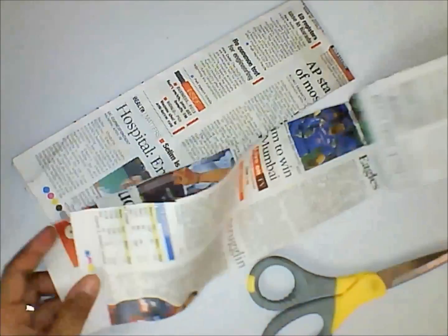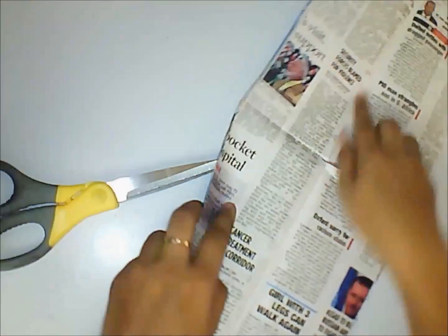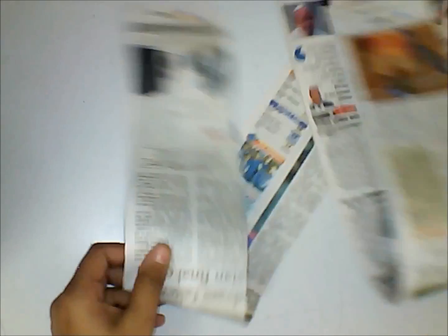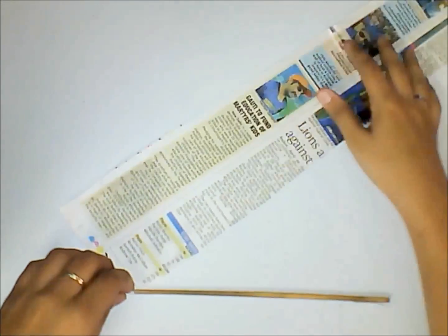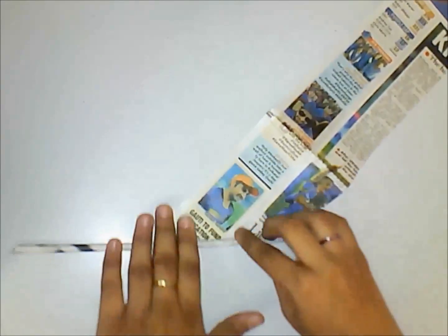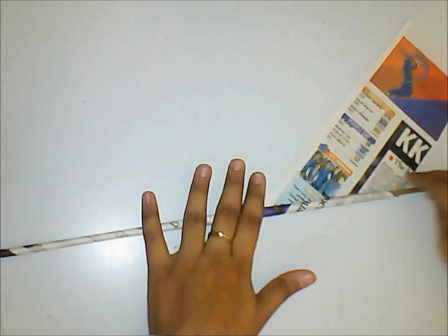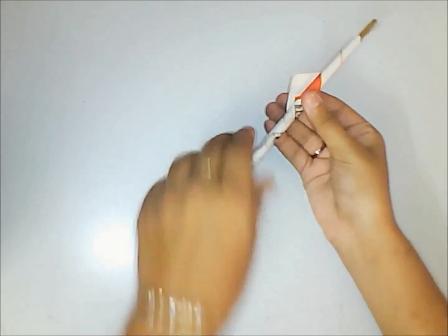One half of the newspaper will be something like this, and the other half will have the foldings at the center. You can cut this using a pair of scissors. Now we can make the newspaper tubes using these strips of newspaper. You can use a long stick or a pencil to make the newspaper tubes. Start rolling it from one end and complete the newspaper tube. Finally, we will obtain the longer newspaper tubes as shown in the video.